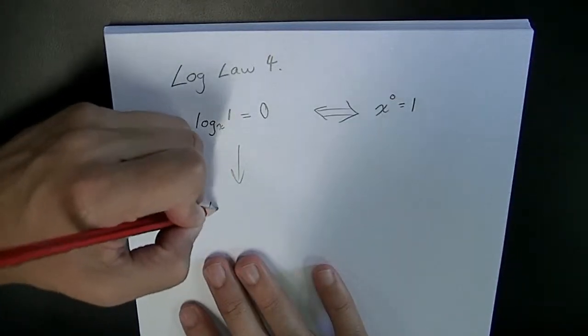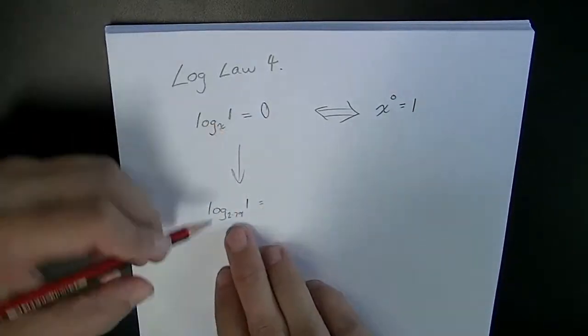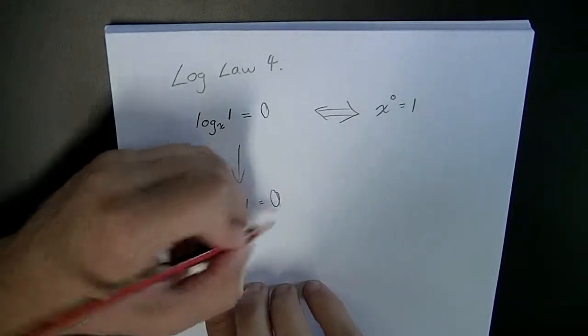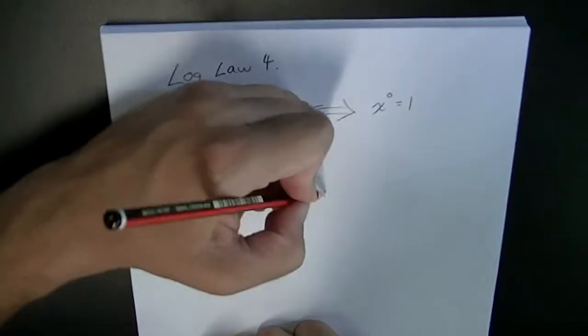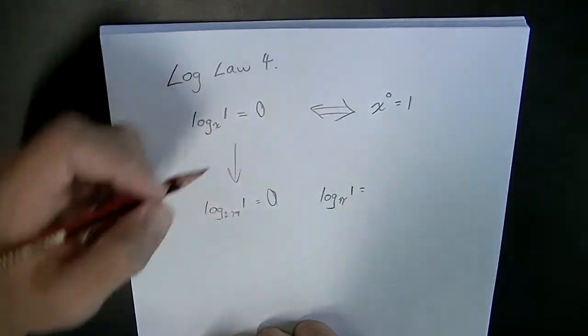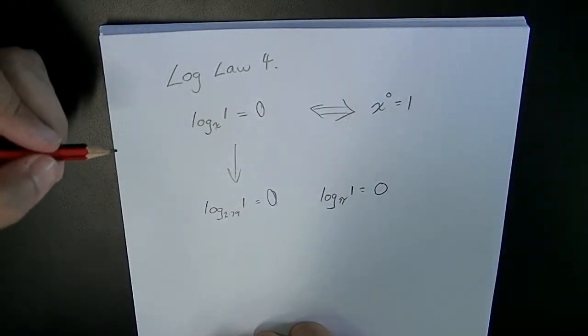When you see something like log base 2.791 of 1, you immediately say that's 0. If you see log base π of 1, you can immediately say that's 0.